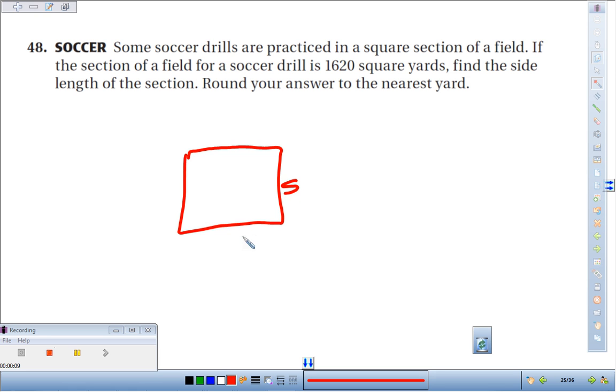So if this is, I'll call this S and this. We're basically trying to figure out what number times itself, or what number squared, is going to be 1620.